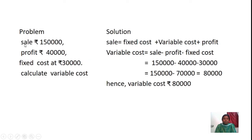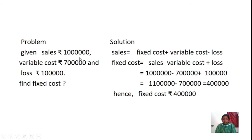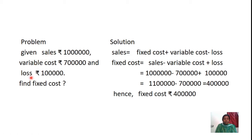Problem 2: Given Sales Rs. 10,000, Variable Cost Rs. 7,000, and Loss Rs. 1,000. Find fixed cost. Using the information about sales, variable cost, and loss, we find the fixed cost.